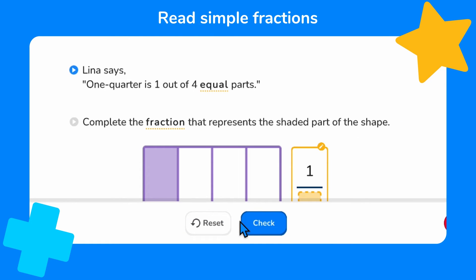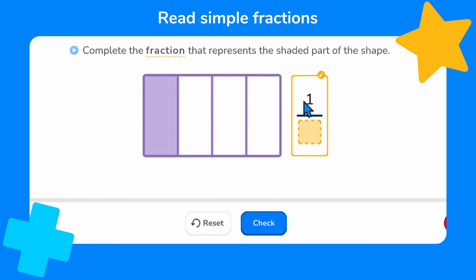Lena says one quarter is one out of four equal parts. We saw this during the connect section. We know that one quarter is the same as one out of four equal parts shaded. We need to complete the fraction that represents the shaded part of the shape. The top number in a fraction shows how many parts have been shaded. The bottom number in a fraction shows how many parts there are in total.